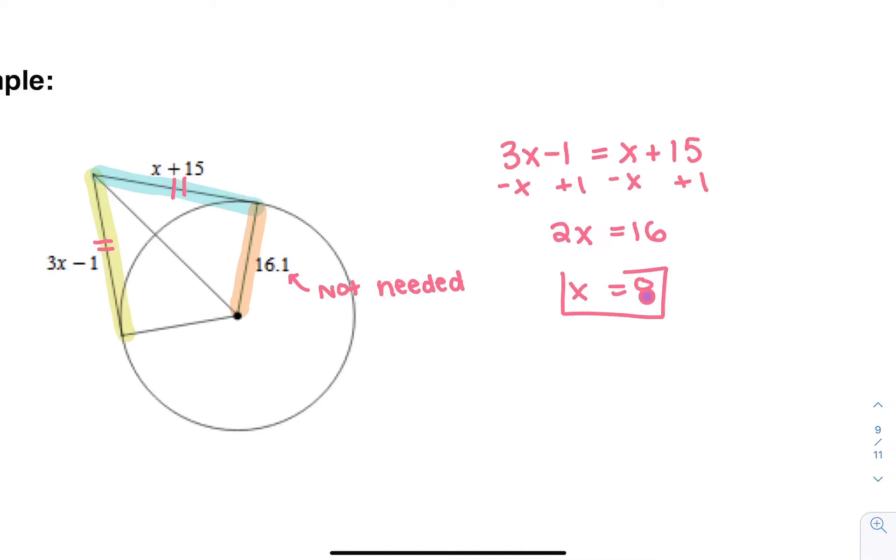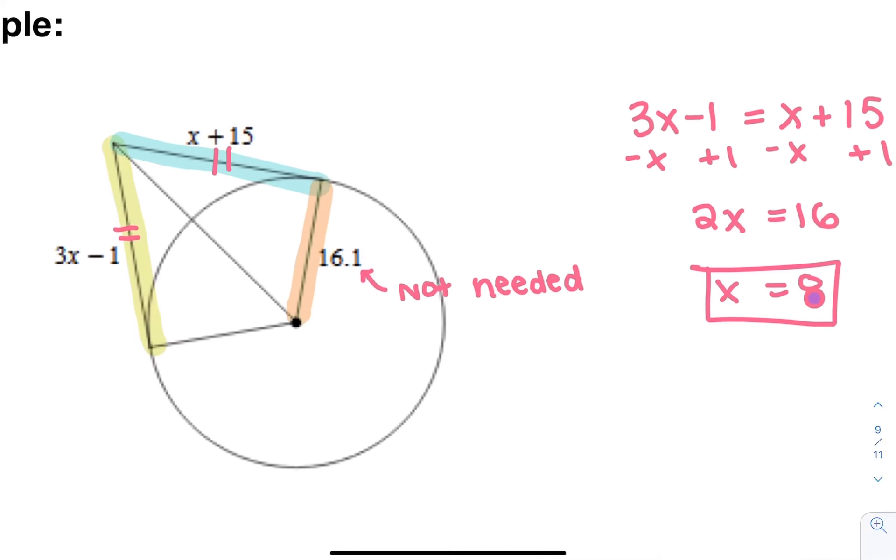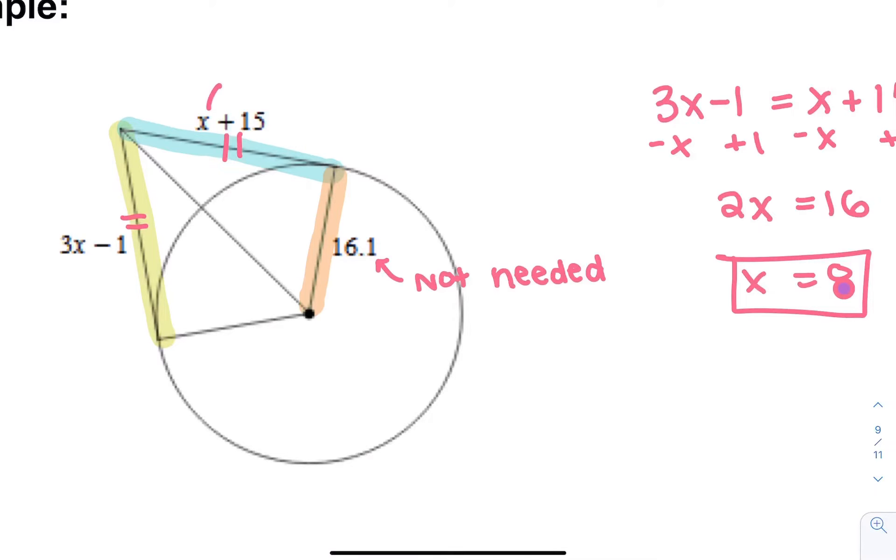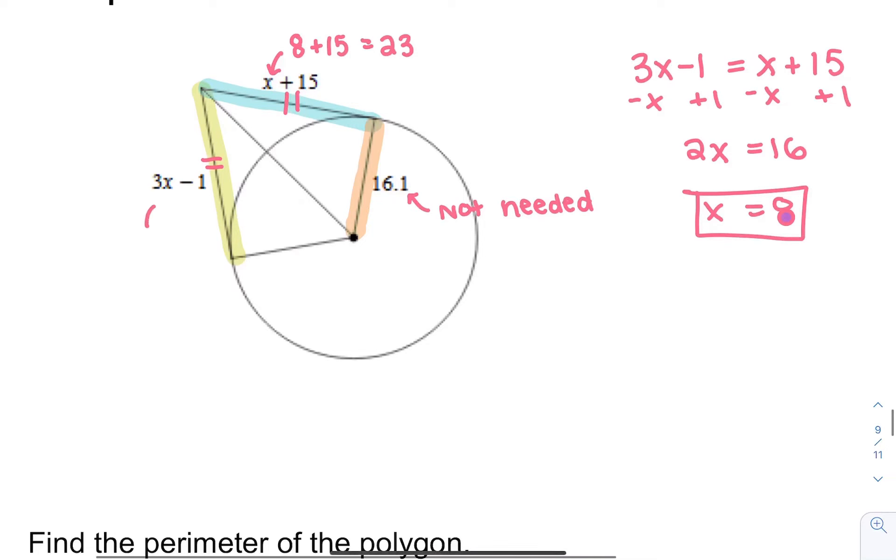If I wanted to go back and figure out what that side length was, I could just plug it back into either side. Maybe I plug it in here. 8 plus 15 is 23. Notice, you don't have to plug it in on the other side because you automatically know, but I'll show you anyway. 3 times 8 minus 1 is 23. Both of these side lengths are 23.